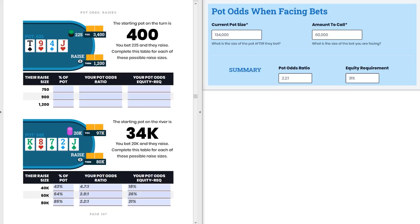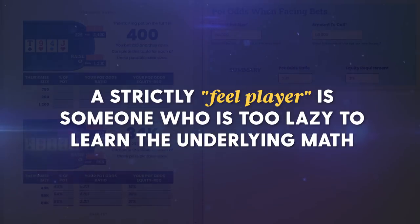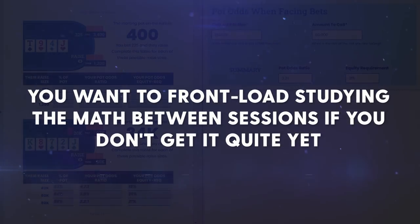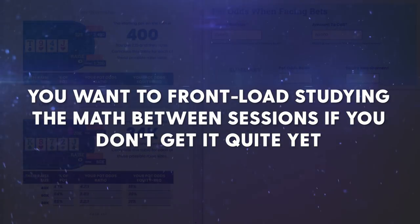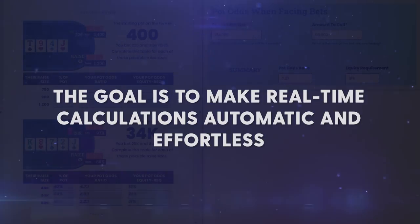Most players get nervous about odds and ratios and skip them altogether, claiming they're feel players. While that's a cute idea in theory, poker is a game of math, so avoiding the math is not a long-term solution. Like anything in life, practice a little, drill a little, and you'll get much better. Do some drills off-table, so that in real time your brain is making these calculations automatically, using less cognitive load on basic math, and spending more time finding creative lines, maximizing your edge, and exploiting your opponent.